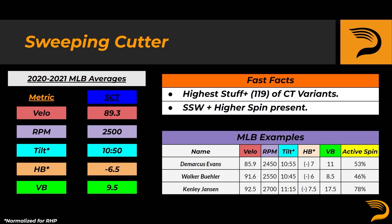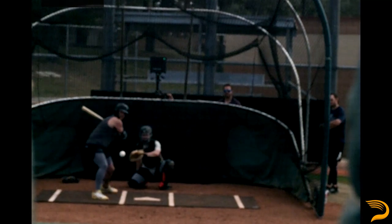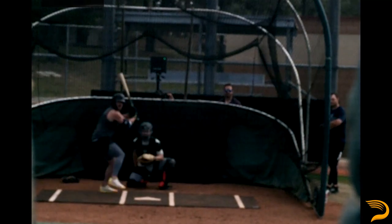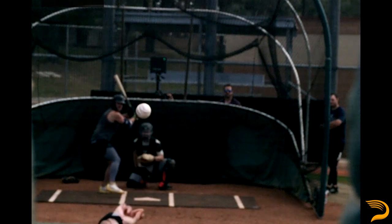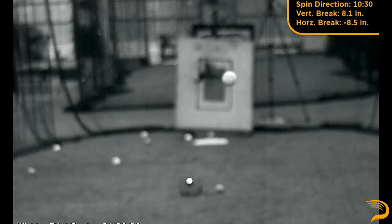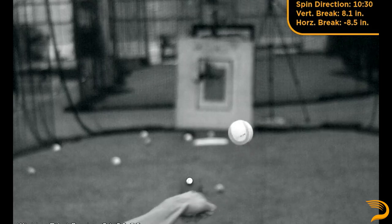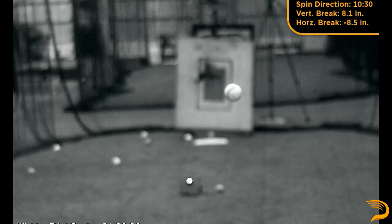The obvious difference between the sweeping cutter and the standard cutter is the addition of slider-esque sweep. These pitchers typically have well above average spin and well above average seam-shifted wake to induce this type of glove-side action while maintaining velocity well above the average slider. This pitch has the highest stuff plus score across all cutter pitch types. At release, the pitcher is behind the ball and on the side of it evenly. That being said, many pitchers will actually impart only a small portion of side spin, with non-magnus movement aiding in the pitch generating glove-side action after release.